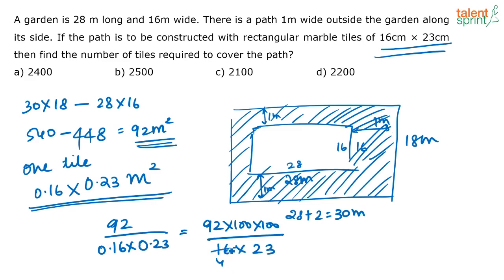Now 4 will go here, 4, 25, again 25. Now 90, 23 into 4 is 92. So you have 25. Yeah, 25 into 4 is 100. 100 into 25 is 2500. So you have 2500 tiles.